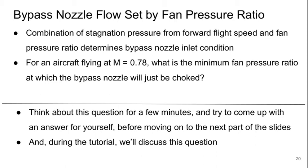Now if we think about the flow that's going to go into the nozzle in the bypass stream, essentially its inlet conditions are set by the fan pressure ratio. So we've got stagnation pressure that's coming in from the forward flight speed and the fan pressure ratio. And these together determine the total stagnation pressure at the inlet of the nozzle.